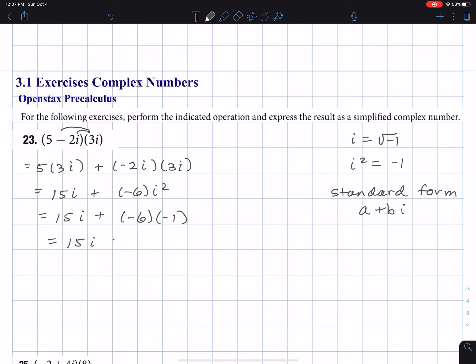So this gives 15i plus 6, and then I put the 6 first, because that's what I'm supposed to do for the standard form.